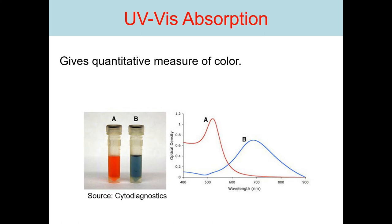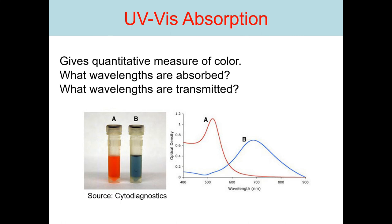UV-visible spectroscopy is utilized to study the optical properties of materials and their photocatalytic properties. This technique gives information about what wavelengths are absorbed by the material as well as what wavelengths are transmitted. Here you can see the colors of the two compounds A and B plotted as optical density versus wavelength — showing the optical density behavior for compound A and compound B respectively.